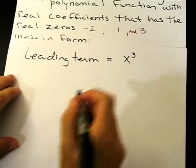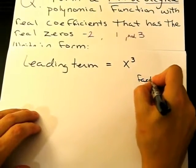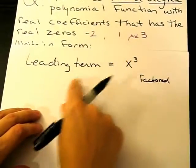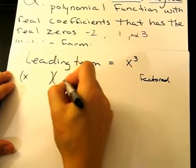With that in mind, I'm going to go ahead and write out my factored form, and then I'll plug my zeros into the factors. So I'll just start by writing empty factors.